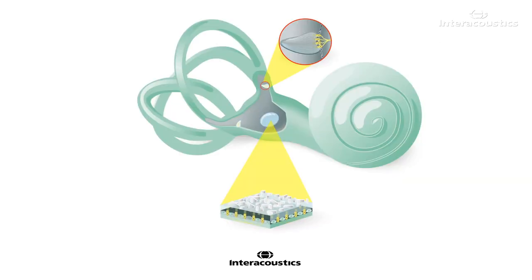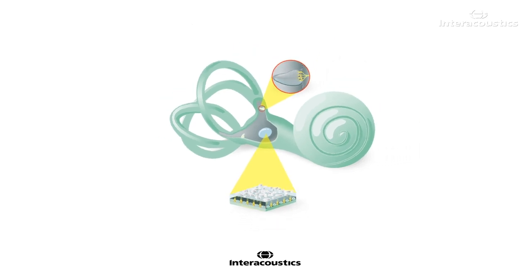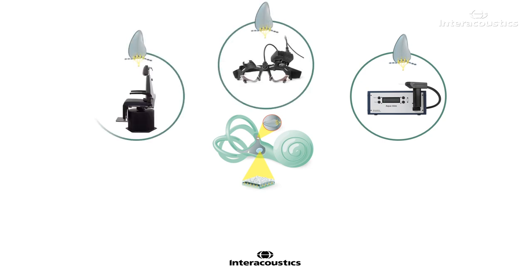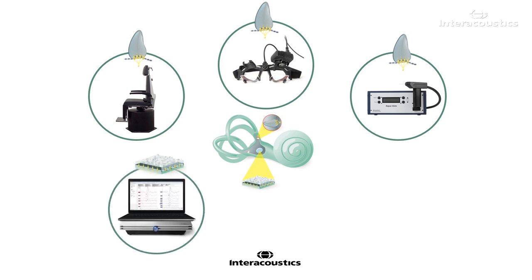For many years, we have used the term vestibular function testing with the implication that we are testing the entire vestibular system. In fact, most of our tests, such as the caloric test, VHIT, rotation chair, and even the Dix-Hallpike tests are considered tests of semicircular canal function and do not evaluate the otoliths. In the 1990s, with the introduction of VEMPs, we finally had a quantitative test for the otoliths.